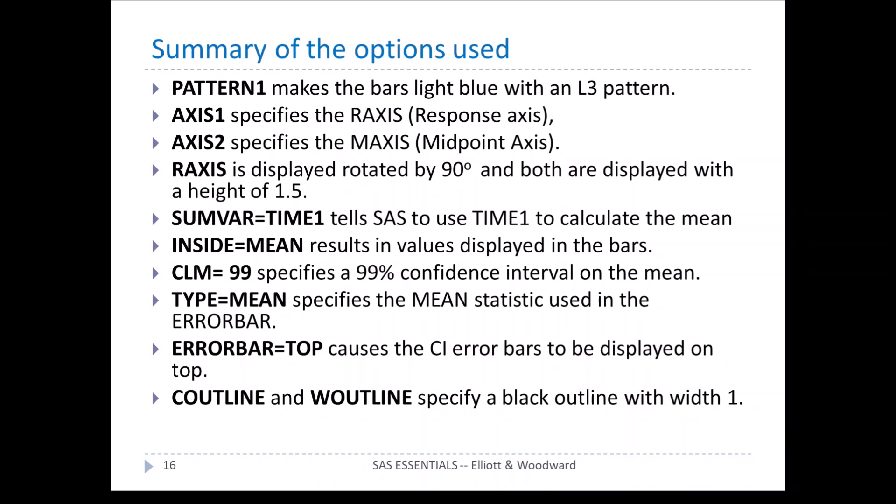Here are some of the options you can use. The pattern statement, axis — r-axis is the response axis, m-axis is the midpoint axis. We've seen inside mean and CLM equal 99; you can change that to 95 if you want. We can put the error bar on top. These options are also listed in the text.